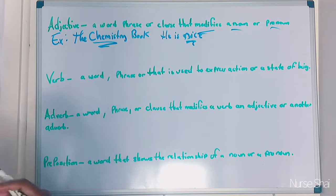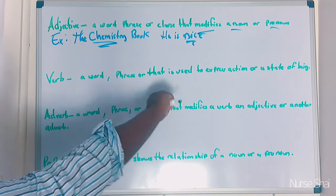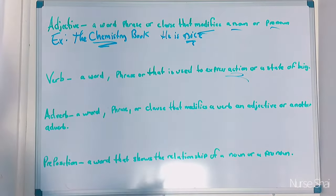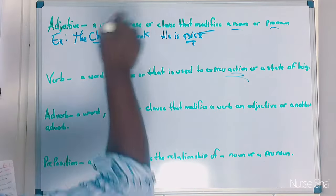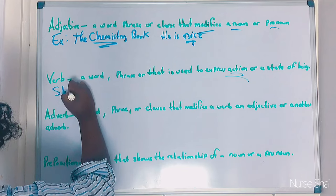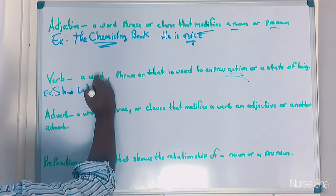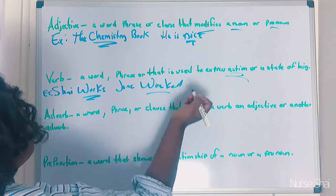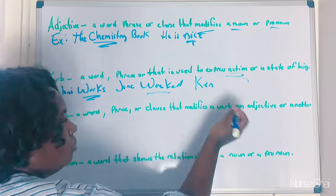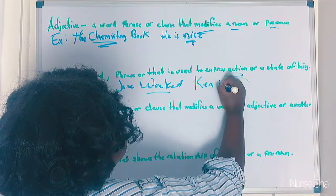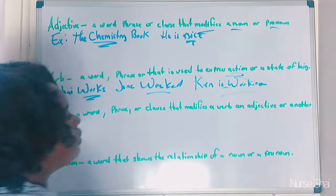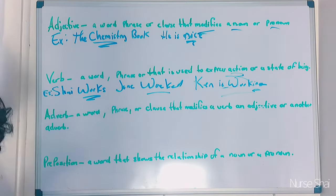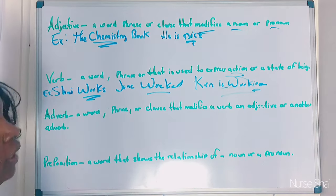A verb is a word, phrase, or clause used to express action or state of being — action is the key word. An example would be 'Shay works,' 'Jane worked,' or 'Ken is working.' It doesn't matter what tense it is, as long as it shows action behind it. I was taught in school that if it has an '-ing,' you know it's a verb.